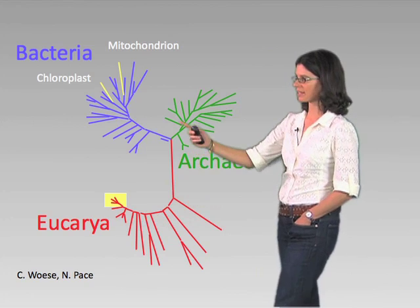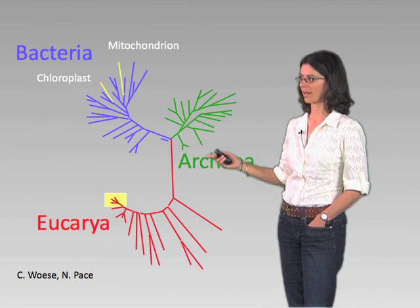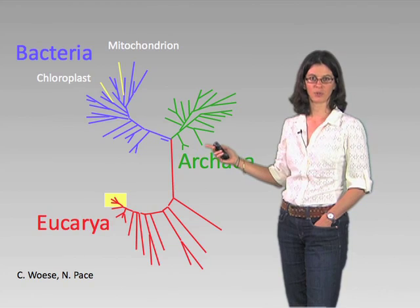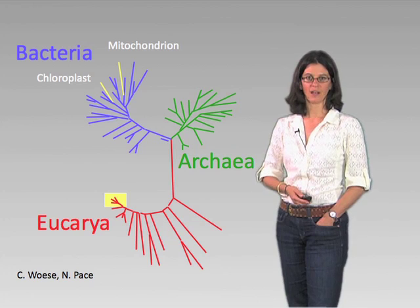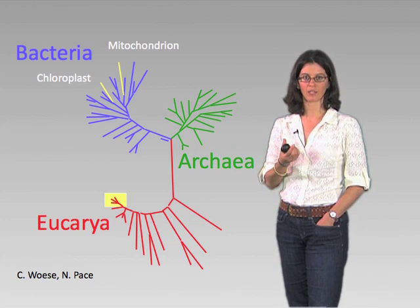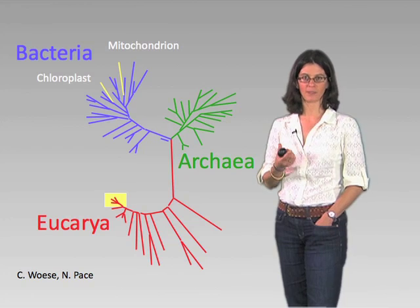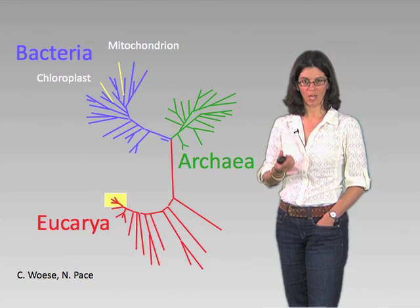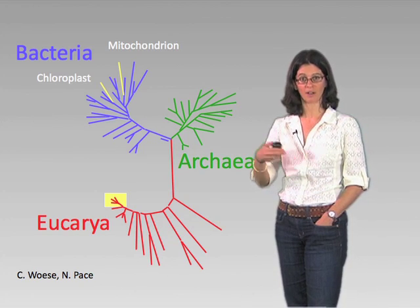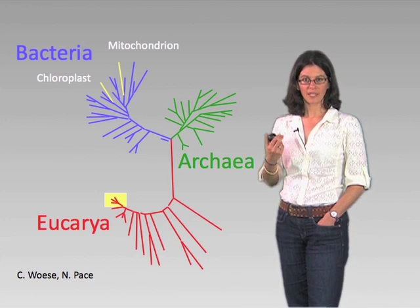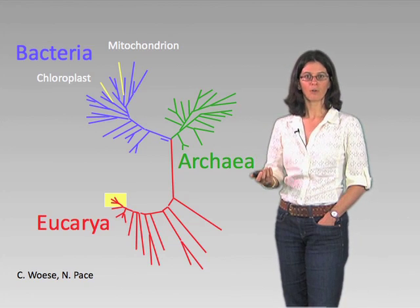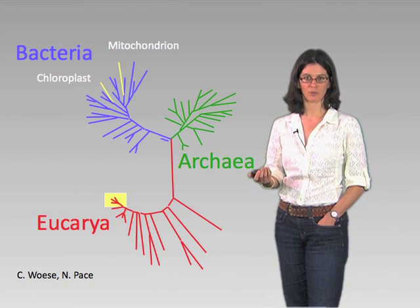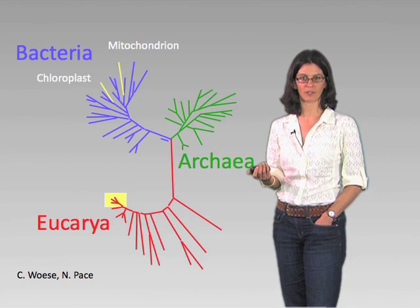What I want you to appreciate is when you look at the tree of life — and that's what this is — it's a tree drawn based upon comparing the sequences of a very particular molecule that every living organism has: ribosomal RNA, which is necessary for the process of translating messenger RNA into protein. Because this is a very universal and highly conserved molecule,